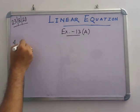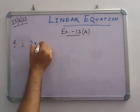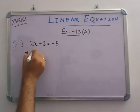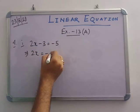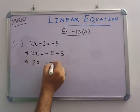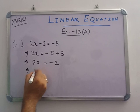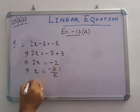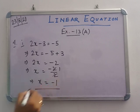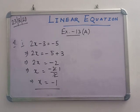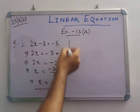In number 4, problem 1: 2x minus 3 equals to minus 5. So 2x equals to minus 5 plus 3, giving 2x equals to minus 2. Therefore x equals to minus 2 by 2, which is minus 1. Verification: 2 into minus 1 equals minus 2, and minus 2 minus 3 equals minus 5.